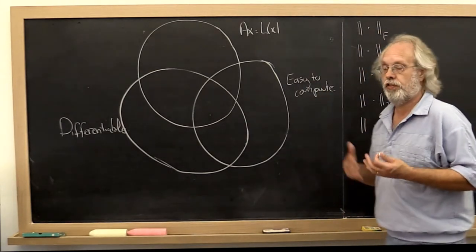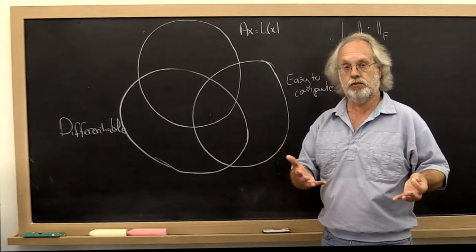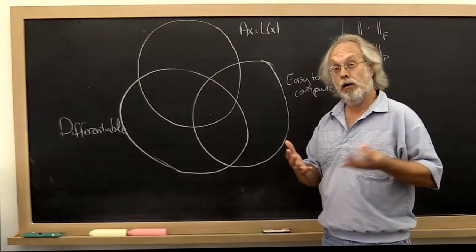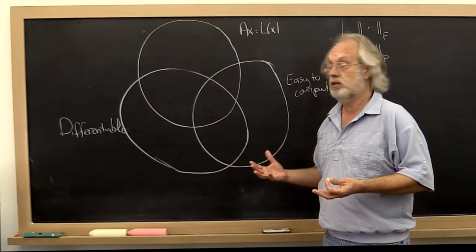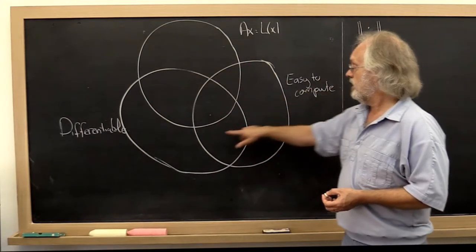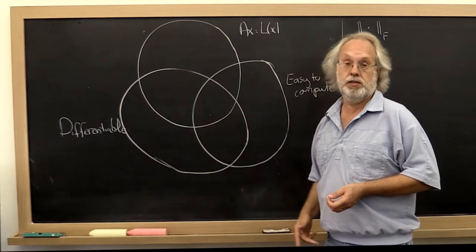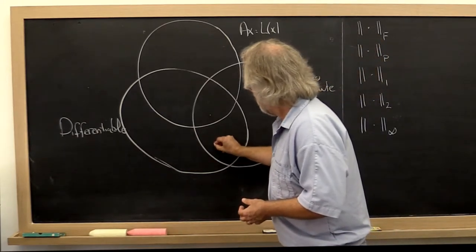Now the Frobenius norm, if you think about it, is a norm that makes sense if you're given the matrix. But it's actually really hard to come up with a way of linking it back to the underlying linear transformation. So it doesn't belong here. But it is easy to compute and it is differentiable because it's the square root of the sum of the squares. So it belongs right here.